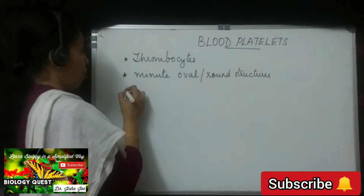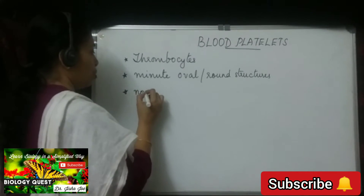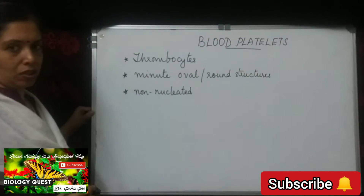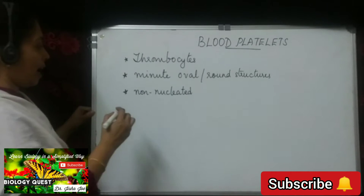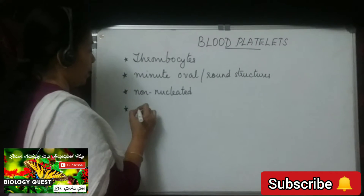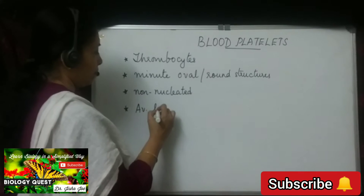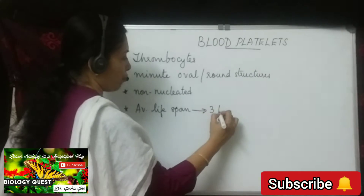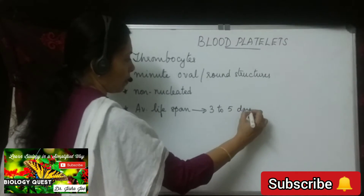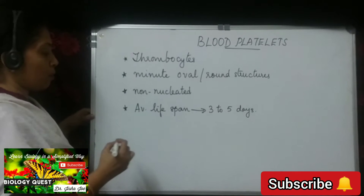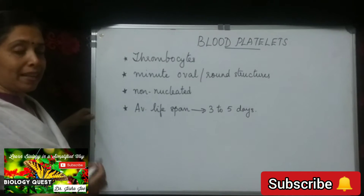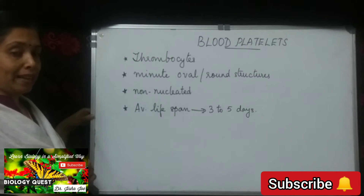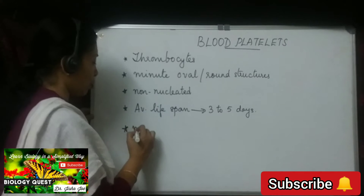They are non-nucleated — they do not have a nucleus. They have an average lifespan of three to five days. They are also born in the red bone marrow, but they are formed from special giant cells which are called megakaryocytes.